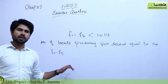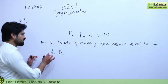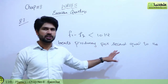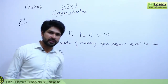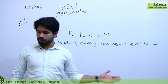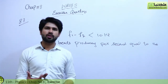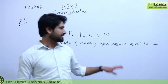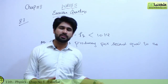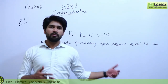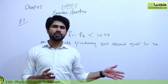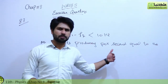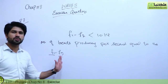The number of beats produced per second equals the difference of the frequencies of the two sounding bodies, where F1 is the frequency of the first sounding body and F2 is the frequency of the second. If we want to get a desired note of frequency, we need to get a standard instrument of that frequency, then adjust our instrument's frequency to the standard by sounding both instruments simultaneously.